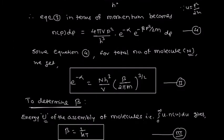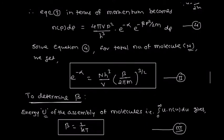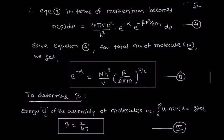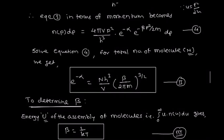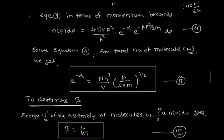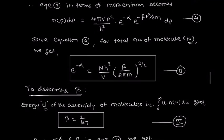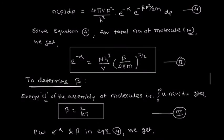For the determination of beta, we consider the total energy of the assembly of gas molecules. We find the energy of the assembly: integrating from 0 to infinity and multiplying by the energy of individual molecules gives total energy U. From that relation: integral from 0 to infinity of u·n(u)du equals capital U. Solving that relation, we get the other constant beta equals 1/kT.